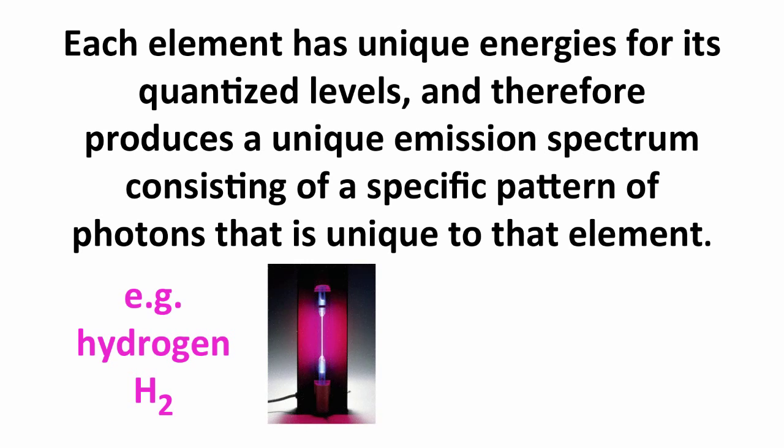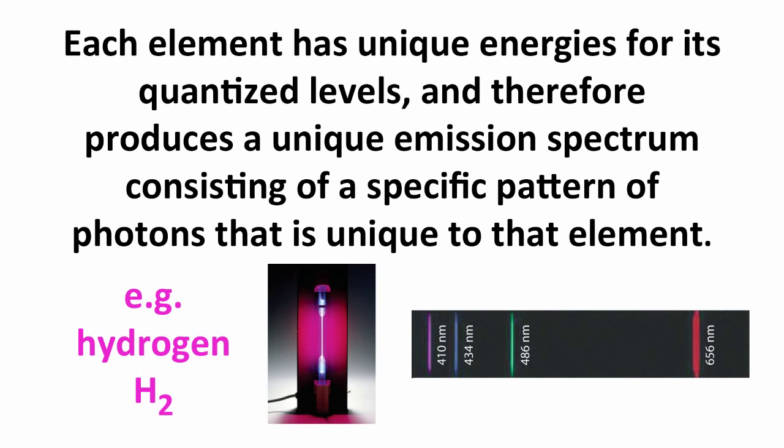So for example, hydrogen in a gas discharge tube gives off a spectrum where the visible portion, at least, looks like this. There's red light of 650 nanometer wavelength, there's blue-green or aqua-colored light of 486 nanometer wavelength, there's purple light of 434 nanometer wavelength, and purple light of 410 nanometer wavelength. And those are the only four colors that you see in the visible part of the hydrogen spectrum.